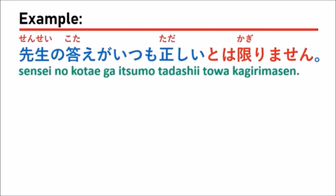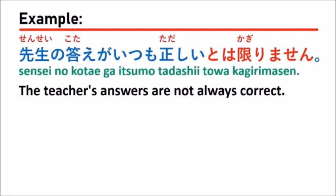先生の答えが、いつも正しいとは限りません。 Which means in English: 'The teacher's answers are not always correct.'